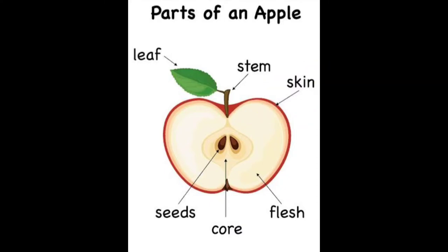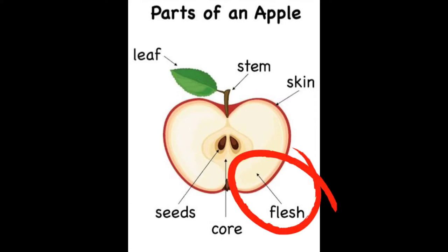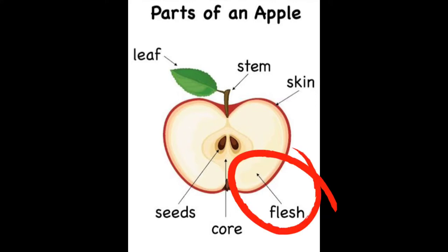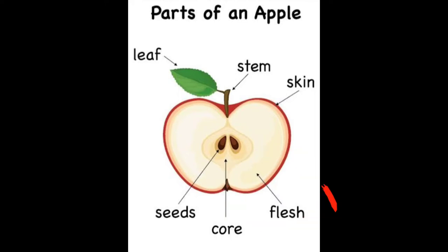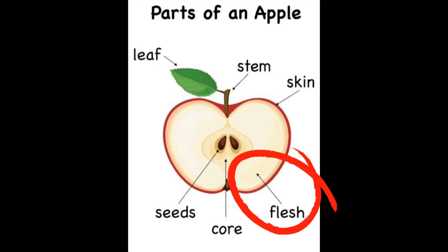Now let's move on to the next part of an apple, which is the flesh. The flesh is the most nutritious part of an apple. It is fresh and juicy, and the most dominant part of an apple fruit. Bagian selanjutnya adalah bagian daging dari buah apple. Bagian ini adalah bagian yang paling bergizi dan juga memiliki banyak vitamin, paling berair, dan juga yang paling enak. Bagian daging adalah bagian pembentuk utama dari buah apple.